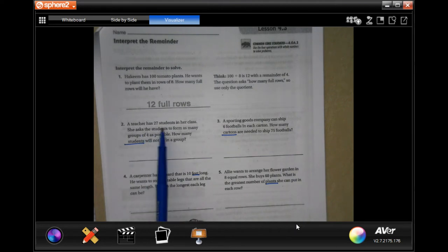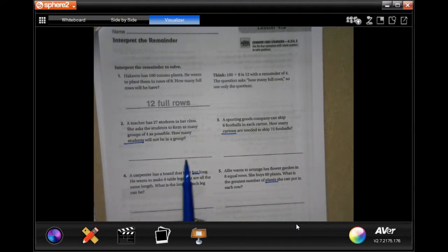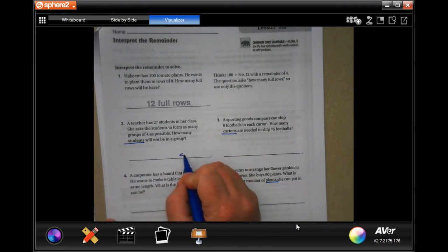Number 2 says, a teacher has 27 students in our class. She asks the students to form as many groups of 4 as possible. How many students will not be in a group? So it's asking for the remainder. Also, you'll see I underline students because it's asking how many students. So whatever our answer is, it's going to be students.